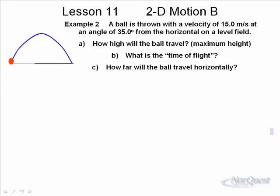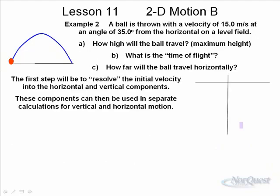Example 2: A ball is thrown with a velocity of 15 meters per second at an angle of 35 degrees. How high will the ball travel, what is the time of flight, and how far will the ball travel horizontally? The first step is to resolve the initial velocity into the horizontal and vertical components. Once we know these, then we can start to solve the problem.